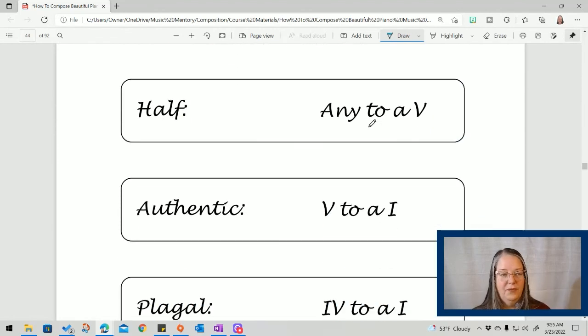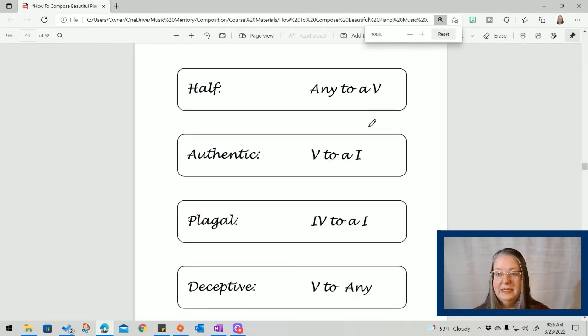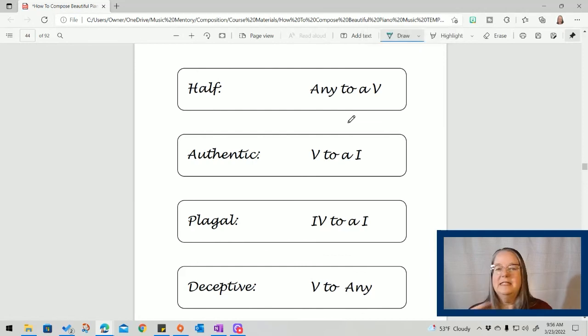Those are the four types of cadences. Let me make this a little smaller so we can see them all. A half is anything going to a five. An authentic is a five to a one. Remember, you can have perfect or imperfect following those three rules. Plagal is a four to a one. And deceptive is a five to anything except a one chord. So have fun with these. And now I think if you didn't understand my tagline before, you might. Like a perfect cadence. This is the end.